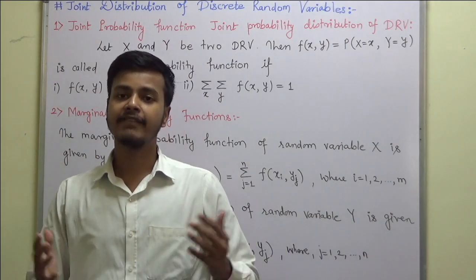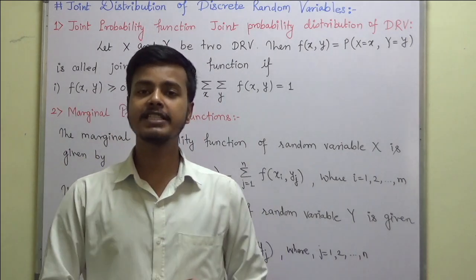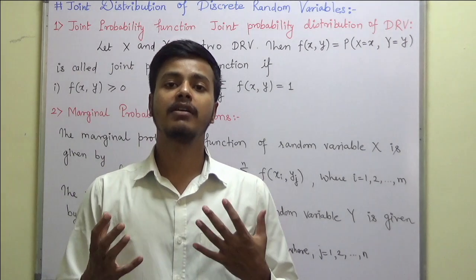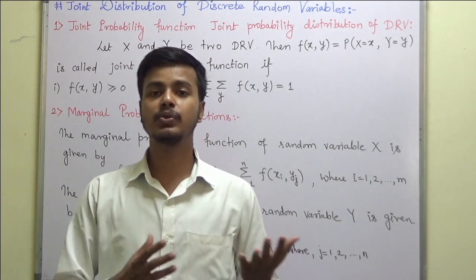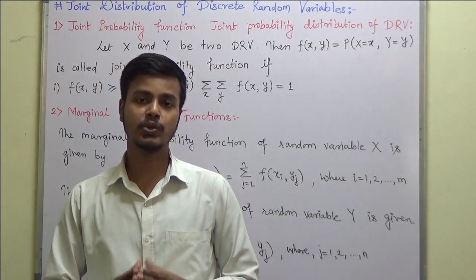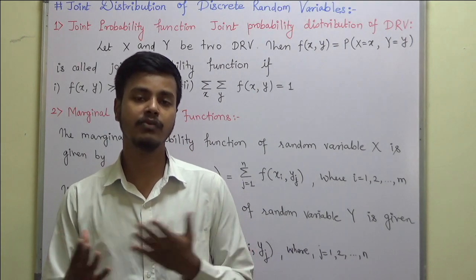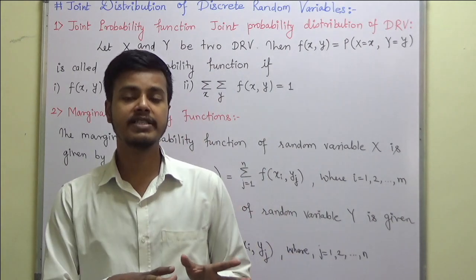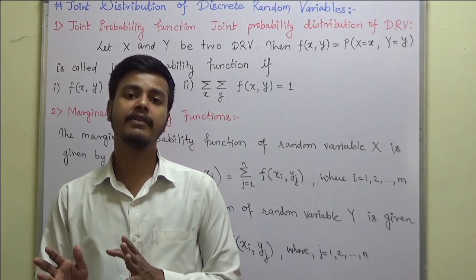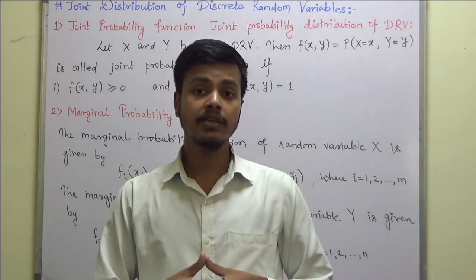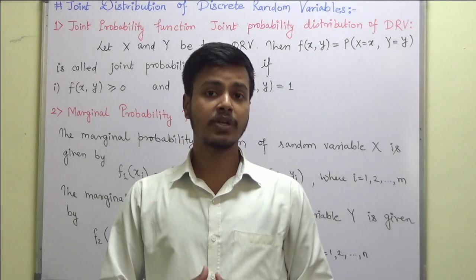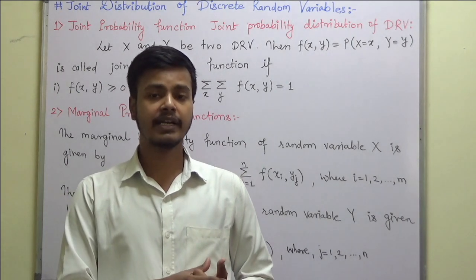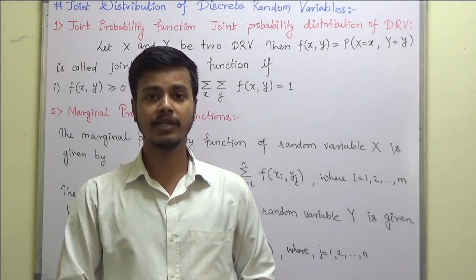Hello everyone and welcome to this learning video. Till now you have seen what random variables are and the two types: discrete random variable and continuous random variable. On the basis of these we have seen the distribution function or the probability distribution for both the continuous and discrete random variable.